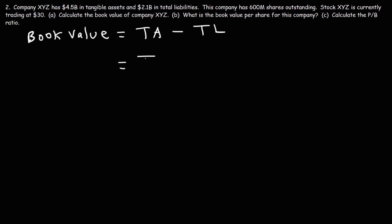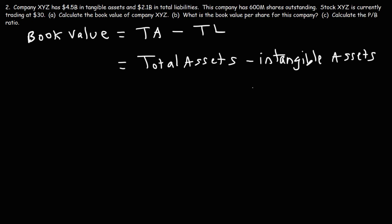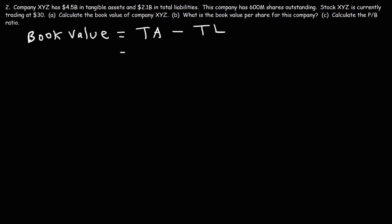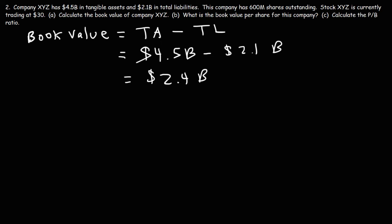You can also express it as total assets minus intangible assets, and then minus total liabilities. But once you subtract the intangible assets from the total assets, you get the tangible assets. So the tangible assets are $4.5 billion and the total liabilities are $2.1 billion, so the book value is going to be $2.4 billion. That's the answer for part A.